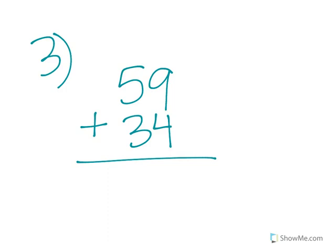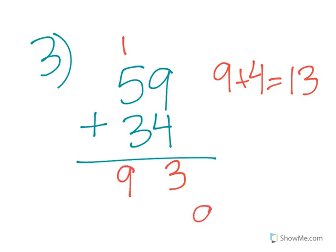Let's do this one: 9 plus 4. If you said 13, you're correct! Our number is 13, so we bring the 3 down and that 1 up. Then we do 1 plus 5 which is 6, and 6 plus 3 is 9. So our total is 93. It's just that easy!